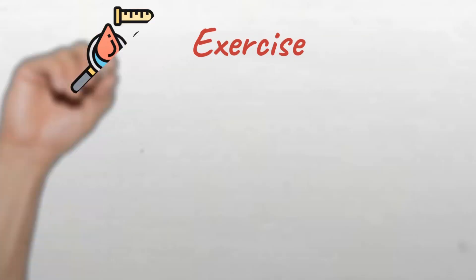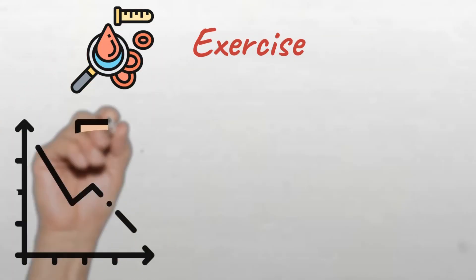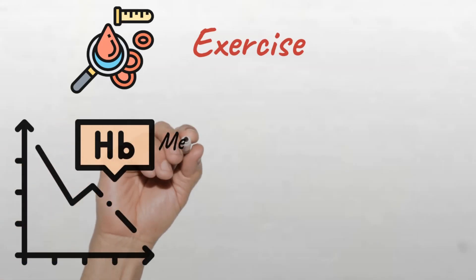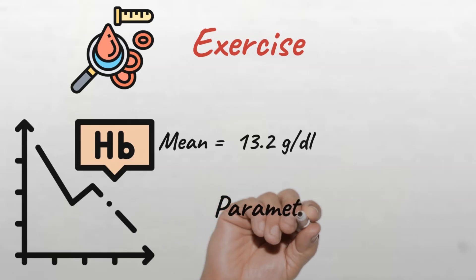Now it's your turn. The mean hemoglobin level of a sample of 20 children in a pediatric hematology clinic was 13.2 grams per deciliter. Is the mean in this example a statistic or a parameter?